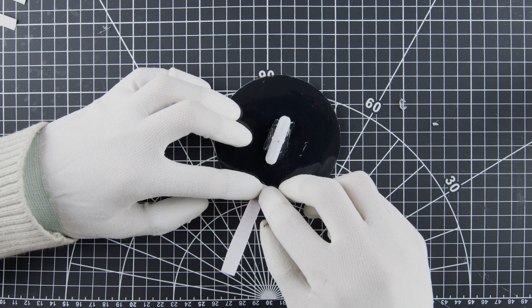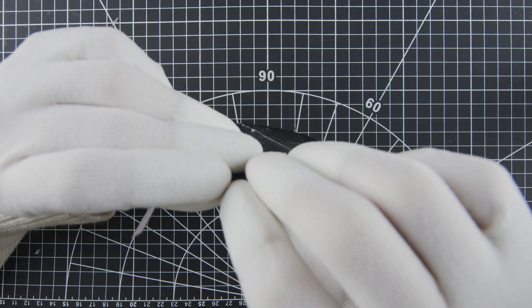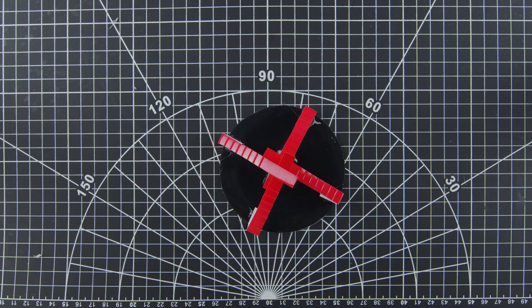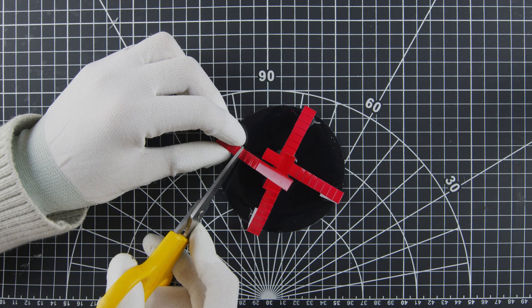Next, I trimmed off the excess and folded the feet to the desired height based on the geometry of the container. These feet stabilize the precession of the plate.